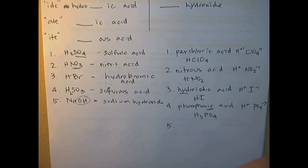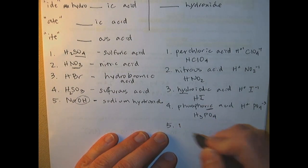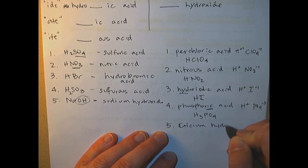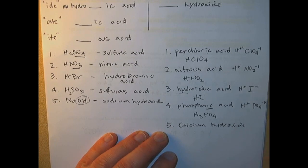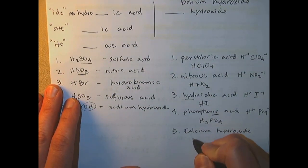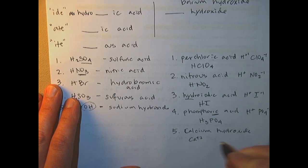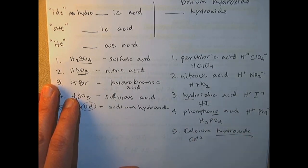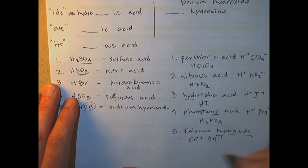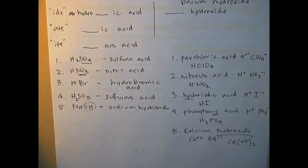Finally, if it says hydroxide in it — like calcium hydroxide — you don't need to consult the acids section. You just need to remember that calcium is plus two and you're always going to have hydroxide, so it's a base. Hydroxide is minus one, and when you crisscross them you get Ca(OH)2, calcium hydroxide.